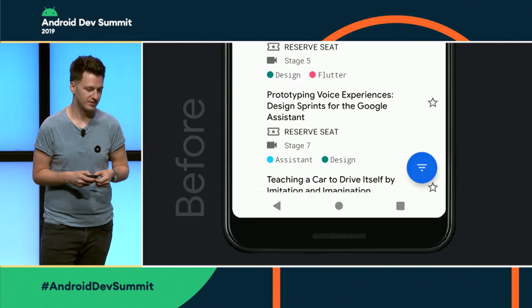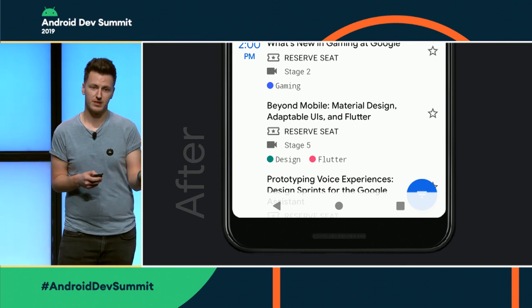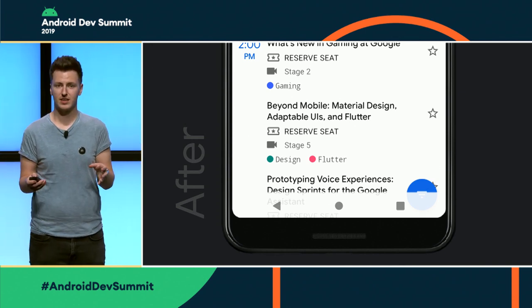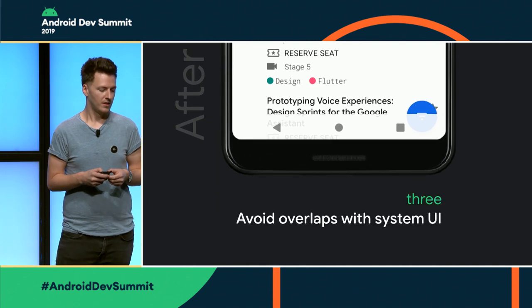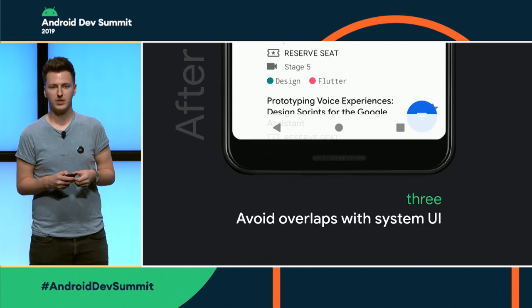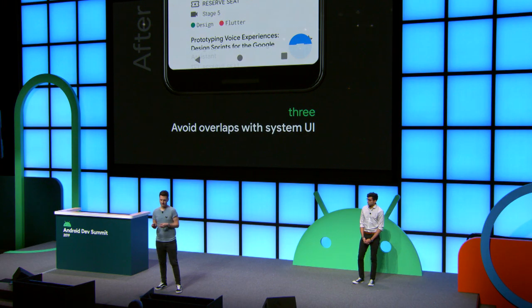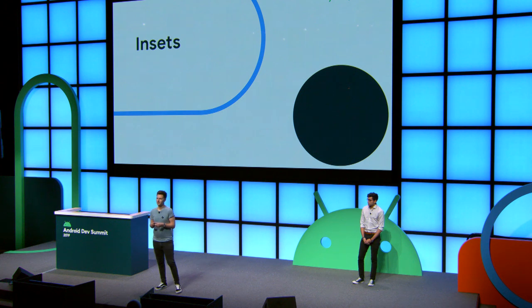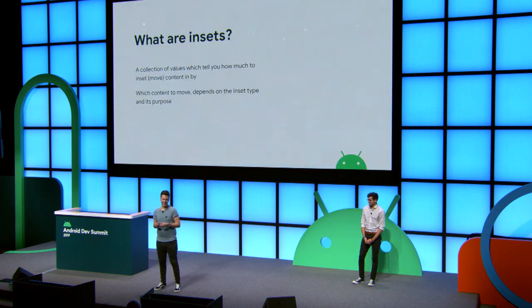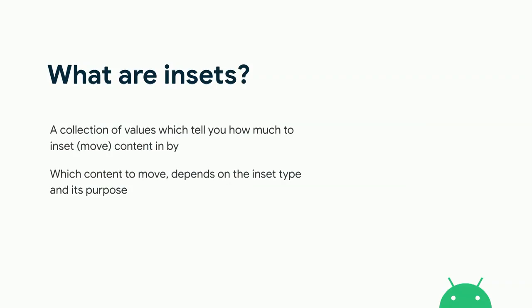Once we've done that, we go from the default layout to something laid out full screen — but you can see the FAB at the bottom right is now being displayed behind the navigation bar, which isn't great. That leads on to step three: avoiding overlaps with the system UI, which brings us to the topic of insets. Insets are just a collection of values that tell you how much to move something in by — kind of the inverse of a safe area. What content to move depends on the inset type, and we have a number of types.